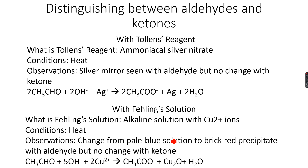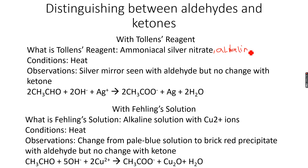What is Tollens reagent? Tollens reagent is ammoniacal silver nitrate - basically silver nitrate dissolved in ammonia. More precisely, it is an alkaline solution of silver nitrate dissolved in ammonia. The condition for the reaction is that you have to heat the mixture.